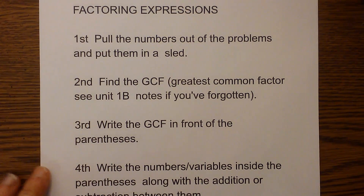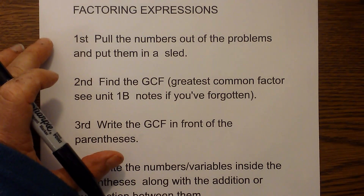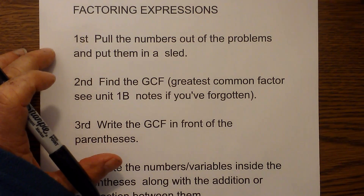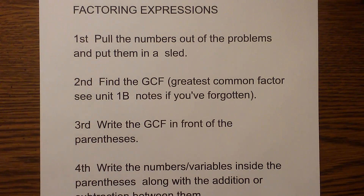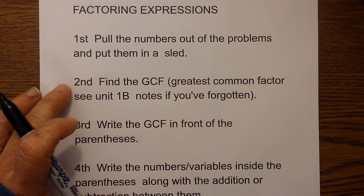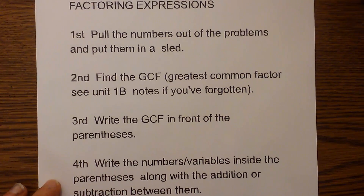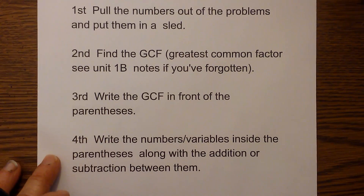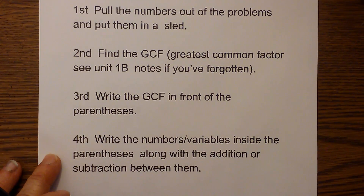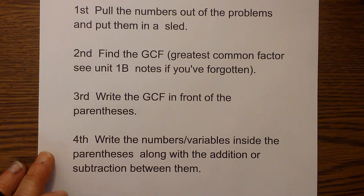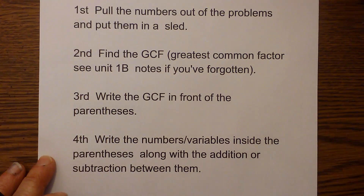Let's go through the steps. First you pull the numbers out and put them in a sled, and then you find the greatest common factor, or the GCF. Then you write the GCF in front of the parentheses, and you write the numbers or variables inside the parentheses along with the addition or subtraction sign between.